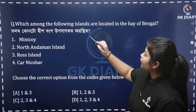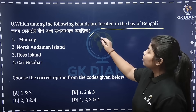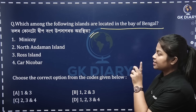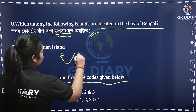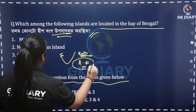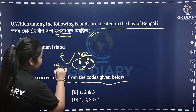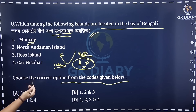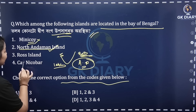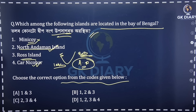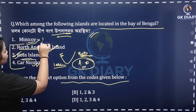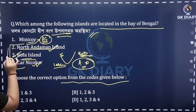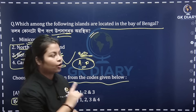Next, which among the following islands are located in the Bay of Bengal? What do you have from the Bay of Bengal? What about the Nicobar? There are many places in the Nicobar, some of them are luxury places. Nine degrees. So one of the correct answers was Rose Island. Two, three, four is the correct answer — Option C.